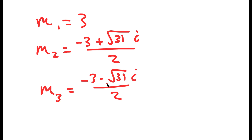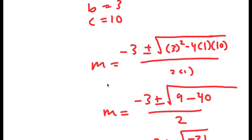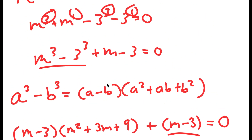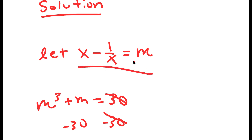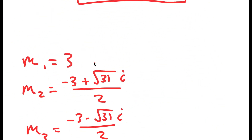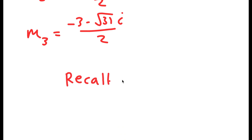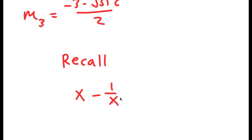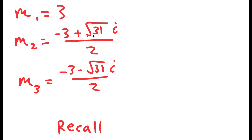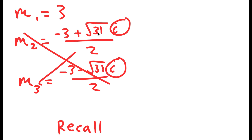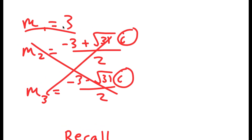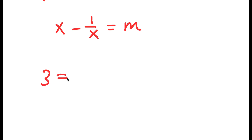Now we want to find the values of x using these values of m. Recall that x minus 1 over x is equal to m. The two solutions involving i are imaginary, so they automatically won't work out. All we're left with is m equals 3, meaning I have 3 is equal to x minus 1 over x. To solve this I'm going to multiply both sides by x.